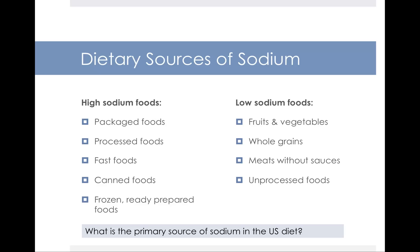When we say frozen foods, that doesn't mean frozen peas and carrots — frozen vegetables generally do not have sodium added unless there's a sauce on them. We're talking about frozen dinners, frozen waffles, and frozen convenience foods. Foods low in sodium include fruits and vegetables, whole grains, meats without sauces, and unprocessed foods. Meat by itself has very little naturally occurring sodium; high sodium on a meat label means it's been brined, injected, or has a high-salt sauce.